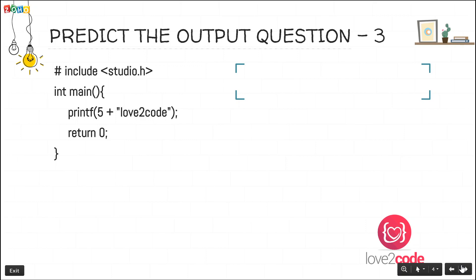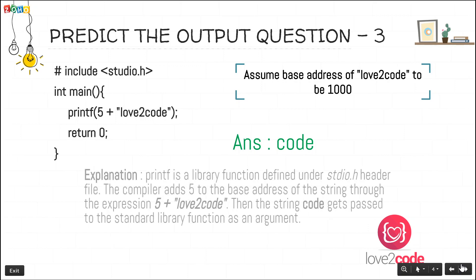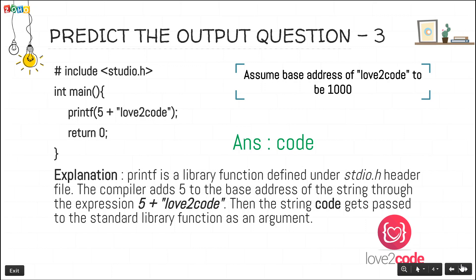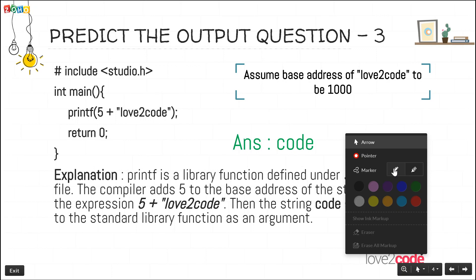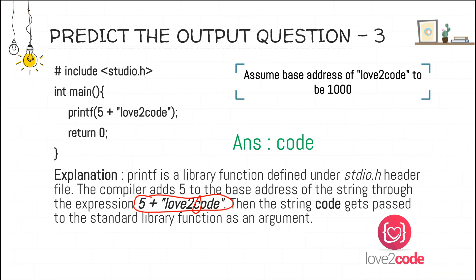The third question has a simple printf statement with the expression 5 plus a string literal. Let's assume the string base address is 1000. printf is a library function defined under stdio.h. The compiler adds 5 to the base address of the string — so 1000 + 5 = 1005. The value at address 1005 onwards gets printed until it finds a null character. The expected output will be "code".